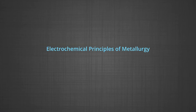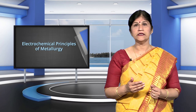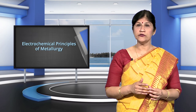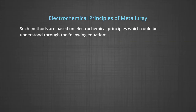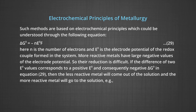Now let us understand some electrochemical principles of metallurgy as applied to metals of high reactivity. We have seen how principles of thermodynamics are applied to pyrometallurgy. Similar principles are effective in the reduction of metal ions in solutions or molten state. Here, they are reduced by electrolysis or by adding some reducing element. In the reduction of a molten metal salt, electrolysis is done. Such methods are based on electrochemical principles understood through the equation ΔG° = −nE°F, where n is the number of electrons and E° is the electrode potential of the redox couple formed in the system. More reactive metals have large negative values of the electrode potential, so the reduction is difficult.